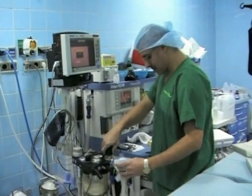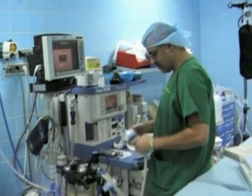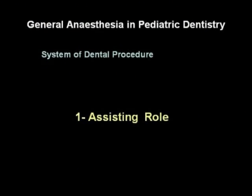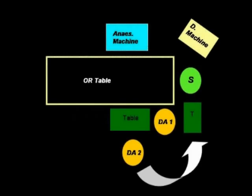Everything should be double-checked before starting the operation. Inside the operating room, we have the anesthesia machine, the dental machine, and the OR table. The surgeon works with two dental assistants — the first dental assistant and the second dental assistant — and two tables.